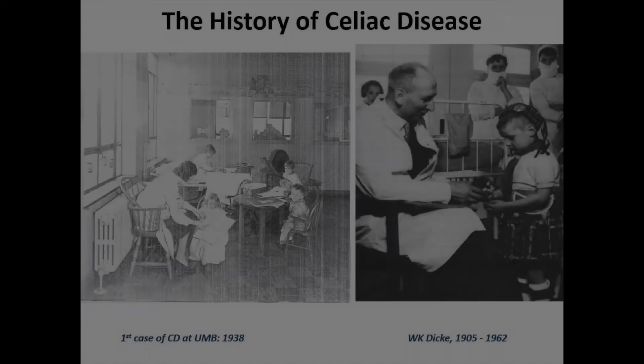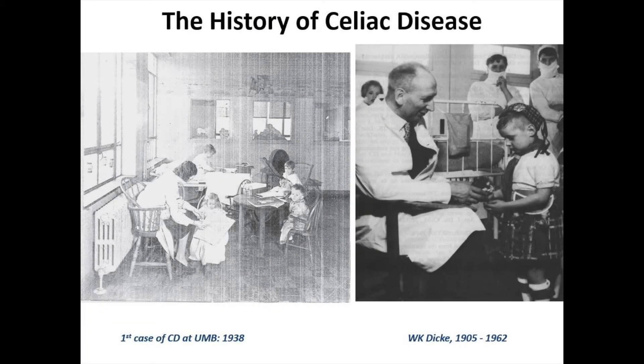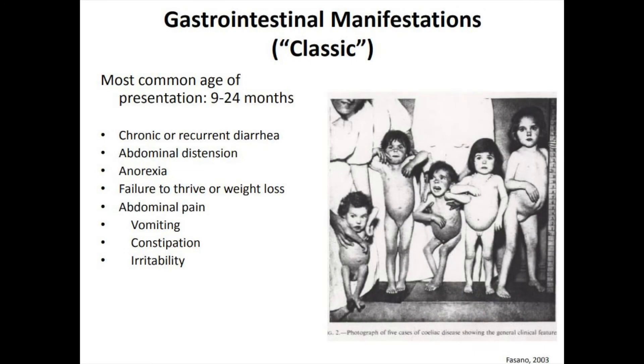Celiac disease is a relatively newly recognized disease. The first patients treated were in the late 1930s at the University of Maryland — children presenting with malabsorption, belly pain, and poor growth, who were treated with bananas and called the 'banana babies.' About a decade later, a Dutch pediatrician, Dr. Dickey, noticed that during World War II he wasn't seeing these patients. Once the war ended, children with poor weight gain and nutritional defects returned to his office, and he confirmed through experiments that the absence of wheat during the war explained their improvement — making the connection that wheat was involved in this malabsorption disease.